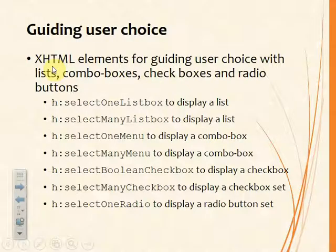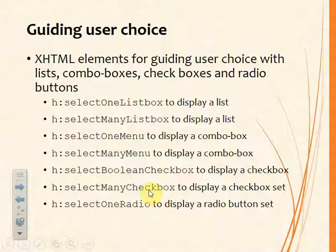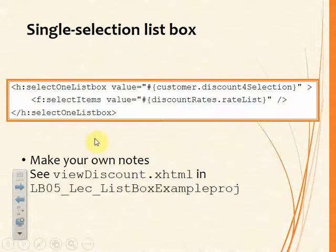Guiding user choice is useful because it reduces the amount of validation you have to do and reduces errors the user can introduce. If you provide a list box with all the valid values, you know you'll get a valid value. Checkboxes, radio buttons, or list boxes are ways of giving the user the opportunity to select from valid values — and with list boxes and menus you can allow selection of multiple values.